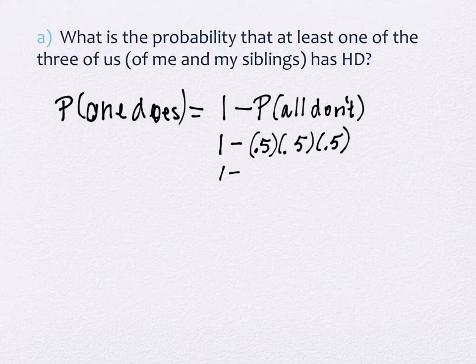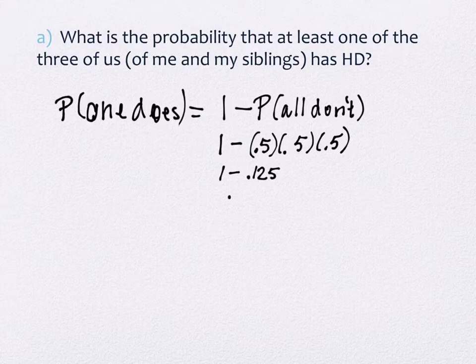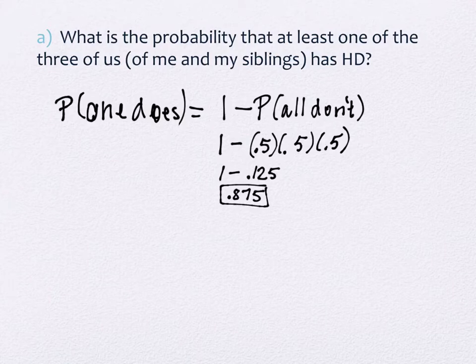What is 0.5 times 0.5 times 0.5? It's one-eighth, or 0.125 as a decimal — you can do this problem in fractions if you prefer. Then one minus 0.125 equals 0.875, or seven-eighths. That's the number I was thinking about in my mind that night. There is an 87.5% chance that my family deals with this in the next generation — at least one of the three of us.